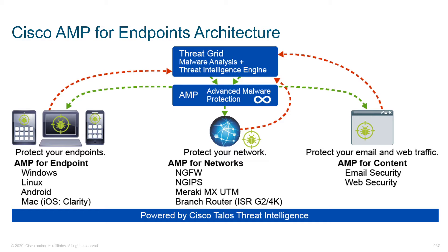Clarity also ties into the Umbrella components. Additionally, we can tie in what we call AMP for content by leveraging the AMP engine on top of solutions such as the ESA and the WSA. All these components give us the capability to tie either endpoints or network devices into Threat Grid as well as Cisco's AMP cloud-based services and solutions.